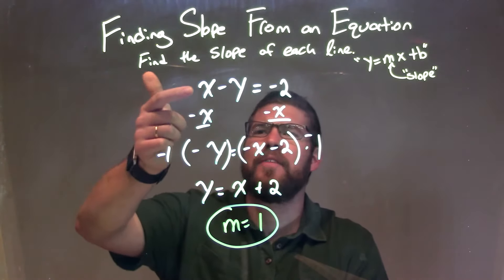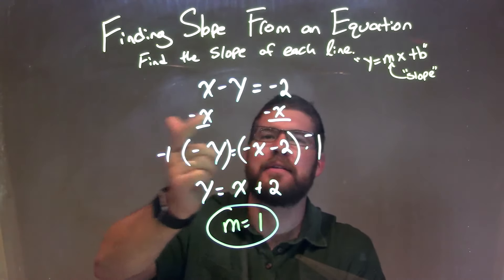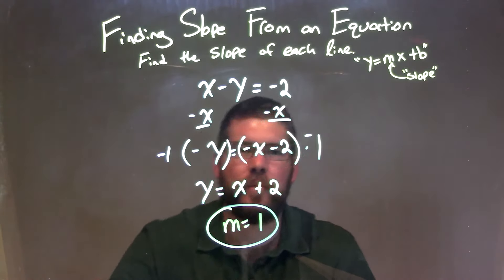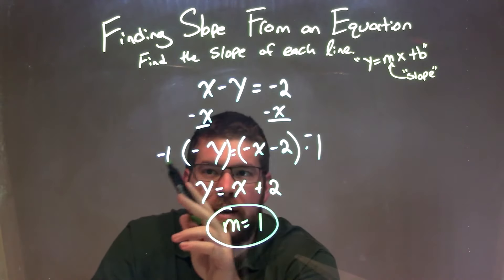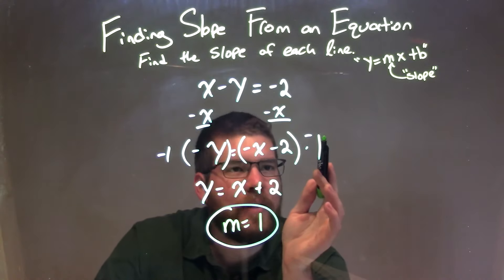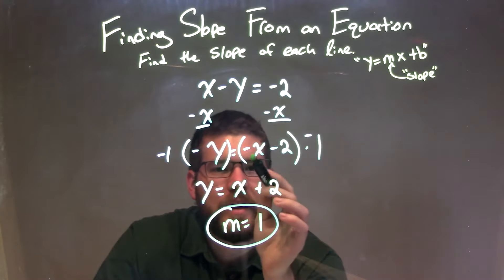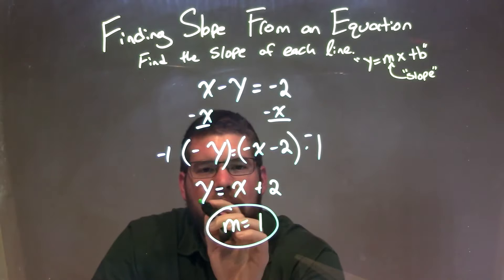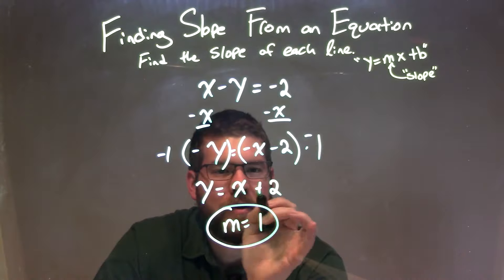So let's recap. We started with x minus y equals negative 2, and then we get y by itself. So I subtract x from both sides, giving me negative y on the left equal to negative x minus 2 on the right. I then still need to isolate y, so I multiply both sides by negative 1, eliminating the negative on the left and giving me a positive y. When I multiply negative 1 on both sides, I need to distribute to both parts: negative 1 times negative x is positive x, and minus 2 times negative 1 is plus 2. So we have y equals x plus 2.